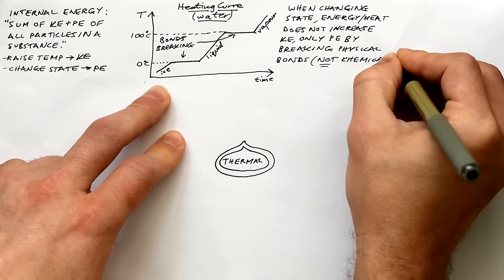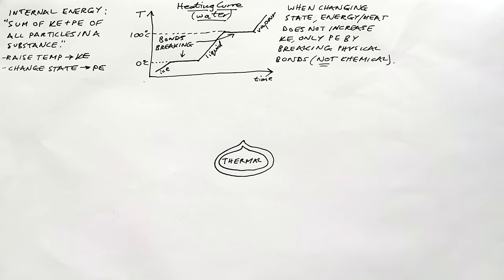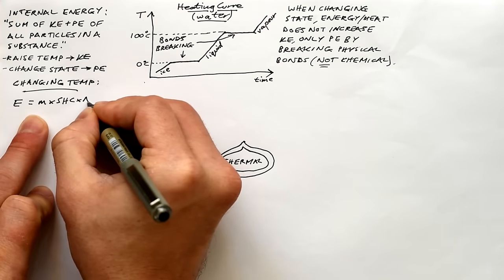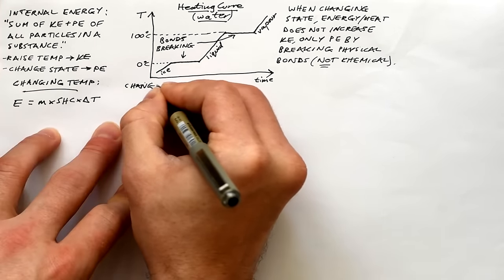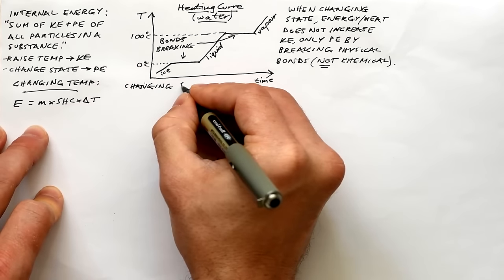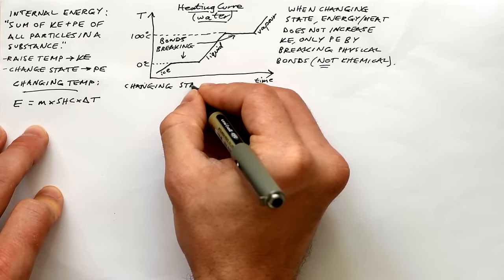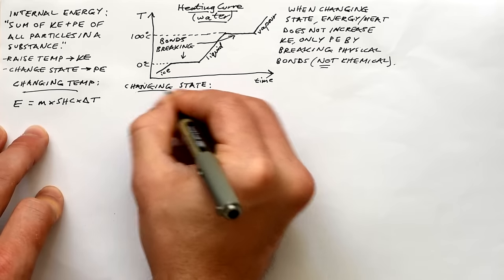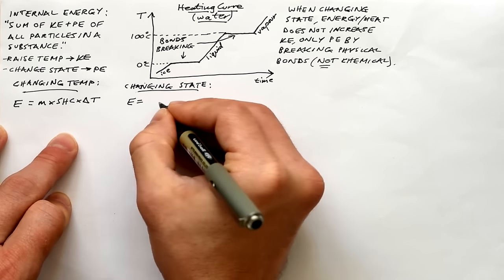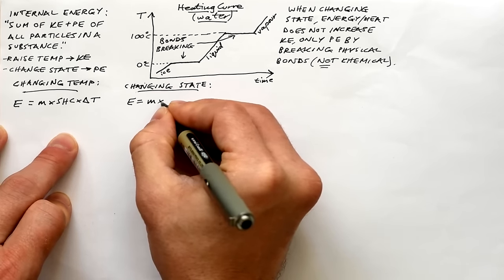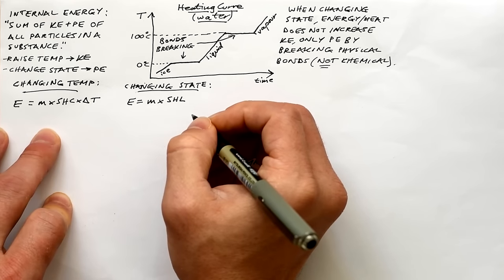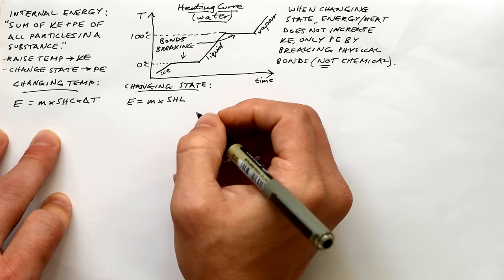Not breaking chemical bonds like covalent bonds, but intermolecular bonds. We have an equation that tells us how much energy is needed to raise the temperature of a substance. It's E — you might see Q but I like E because it's energy — equals mass times specific heat capacity, that's specific to the material, times the change in temperature delta T. For changing state we have the specific latent heat equation: energy equals m times SLH.